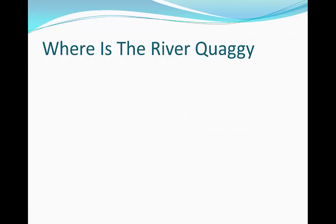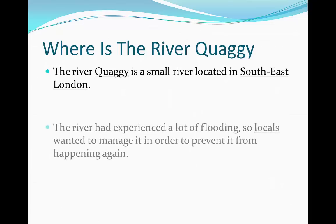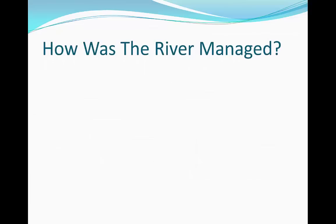So where is the River Quaggy? The River Quaggy is a small river located in southeast London. The river had experienced a lot of flooding in the past, so locals wanted to manage it in order to prevent it from happening again.